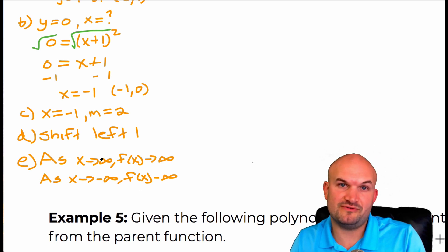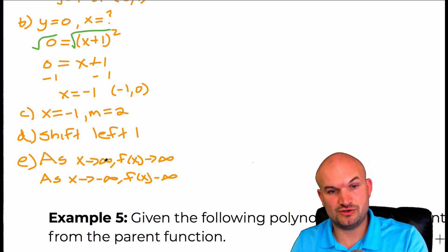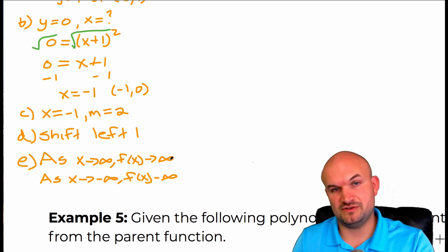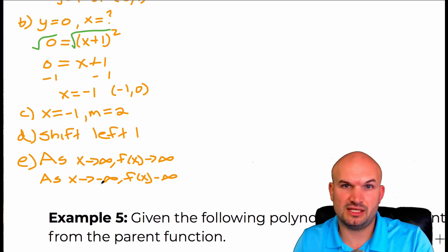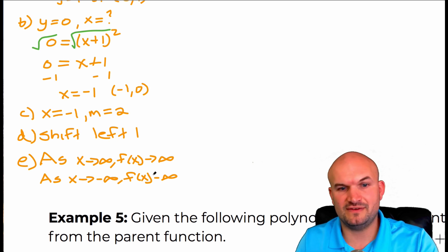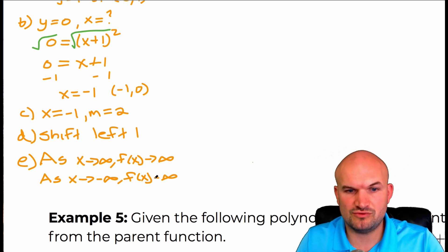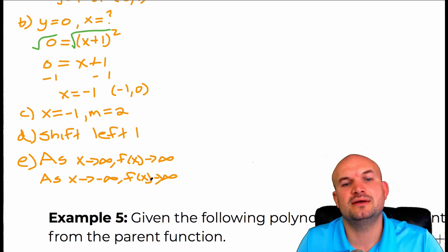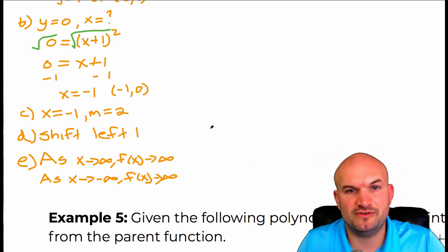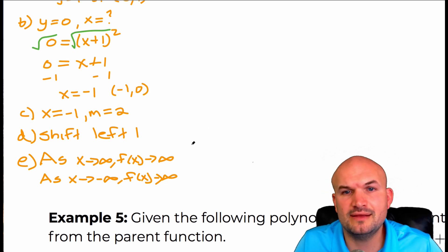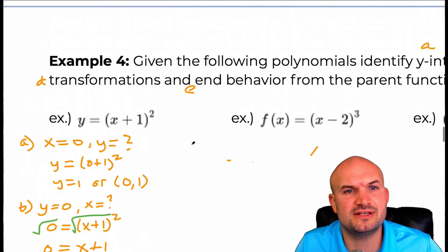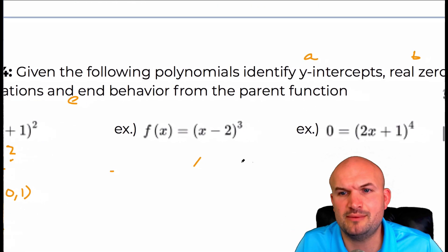As x approaches infinity, that means as the graph is going to the right, the graph is rising. As the graph is going to the left, the graph is also rising. That basically covers everything for that one.